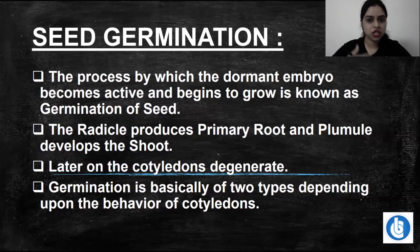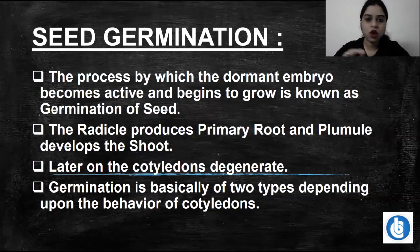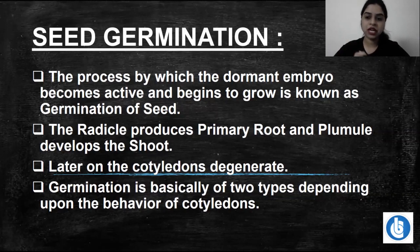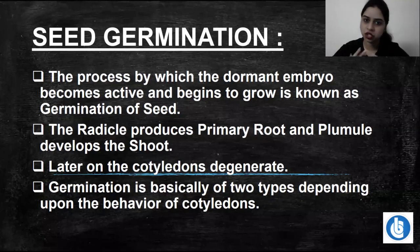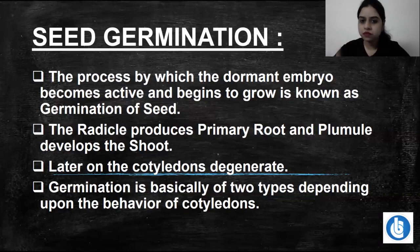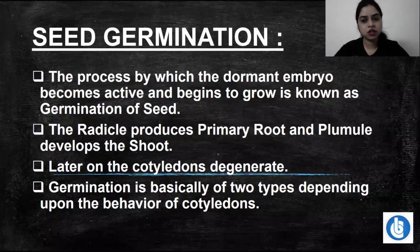Seed germination basically means when a seed comes out of its dormant stage, it becomes active and viable, starts its growth — that is when germination of the seed occurs.